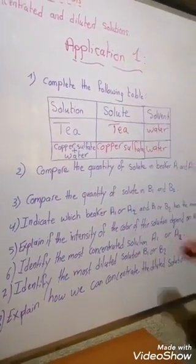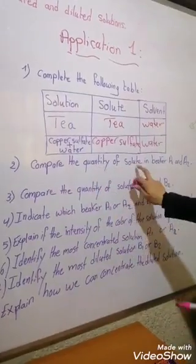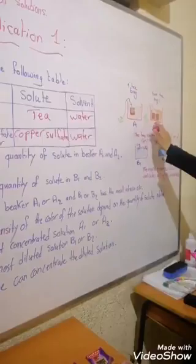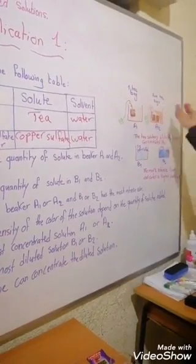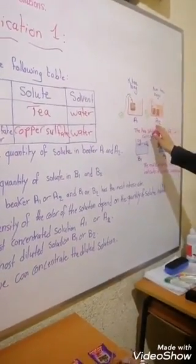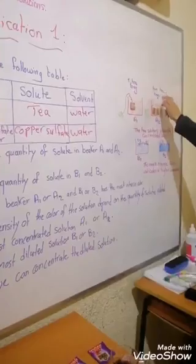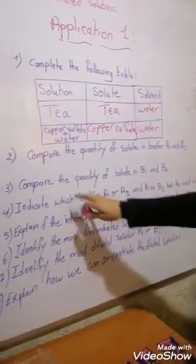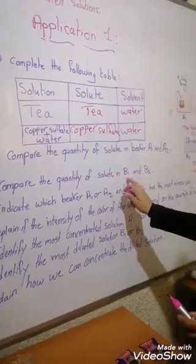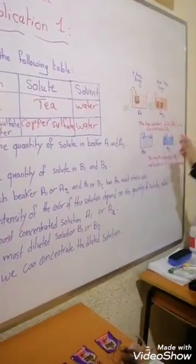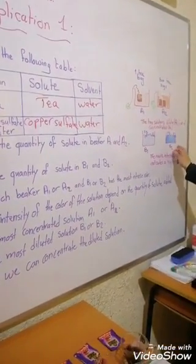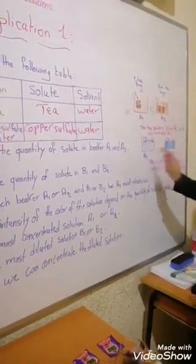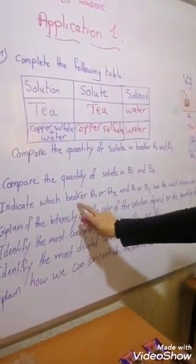Comparing the quantity of solute in beakers A1 and A2: in beaker A2 the quantity of solute is greater than in A1. Similarly, comparing B1 and B2, the quantity of solute — 15 grams of copper sulfate in B2 — is greater than in B1.